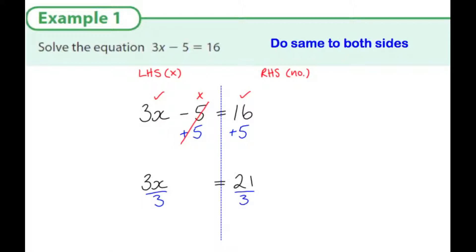But I don't want 3x, I only want 1x. So if I divide both sides by 3, that will give me what x is. So x is 21 divided by 3, or 7. So that's how we solve that equation.